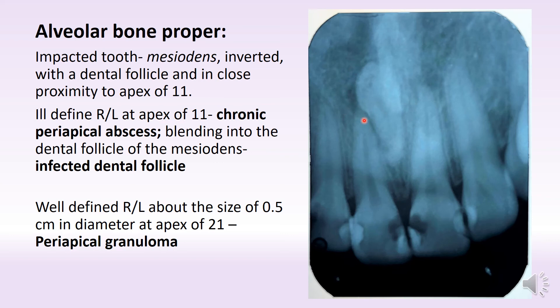What you definitely can see is that because of the loss of lamina dura and PDL at the apex of 1-1, there is an ill-defined radiolucency at the apex of 1-1, and this radiolucency is blending with the follicle of the impacted mesiodents.